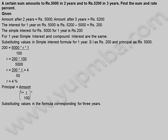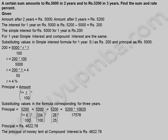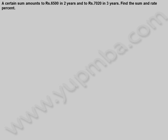Principal = Amount / (1 + r/100)^n. Substituting for 3 years: Principal = 5,200 / (1 + 4/100)^3 = 5,200 / (104/100)^3 = 5,200 / (26/25)^3 = 5,200 × 15,625 / 17,576 = 4,622.78 rupees. The principal lent at compound interest is 4,622.78 rupees.